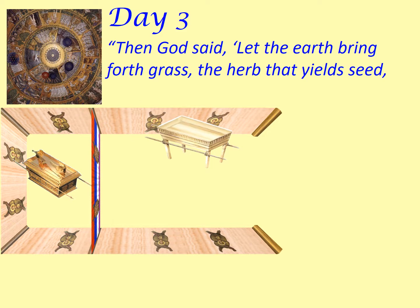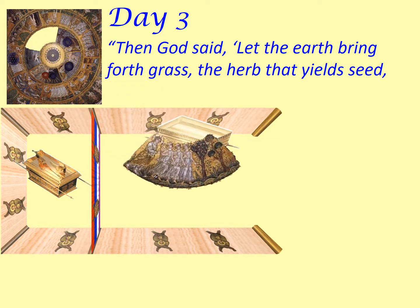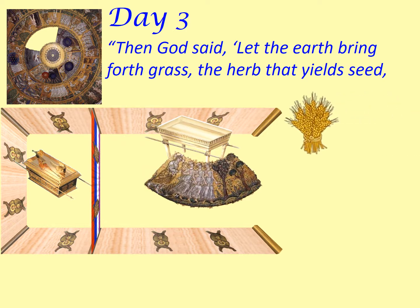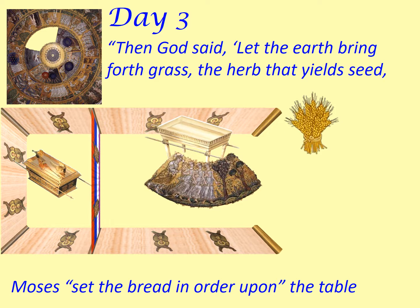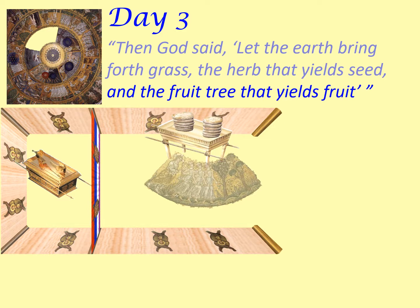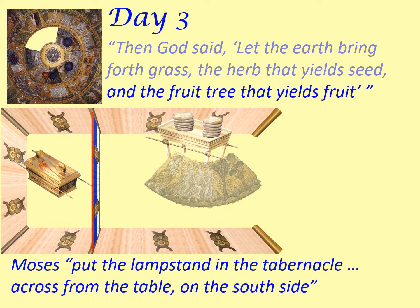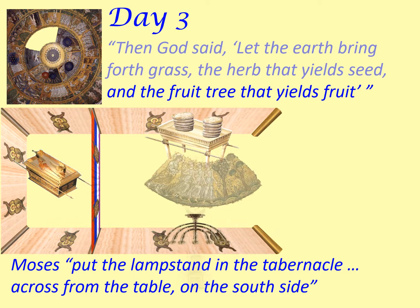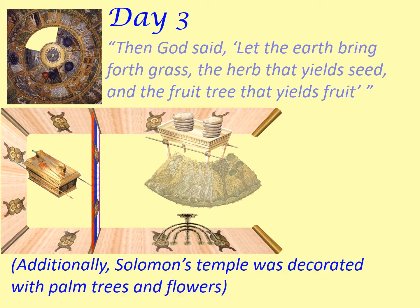Then God said, let the earth bring forth grass, the herb that yields seed. Moses set the bread in order upon the table. Moses put the lampstand in the tabernacle across from the table on the south side. Additionally, Solomon's temple was decorated with palm trees and flowers.